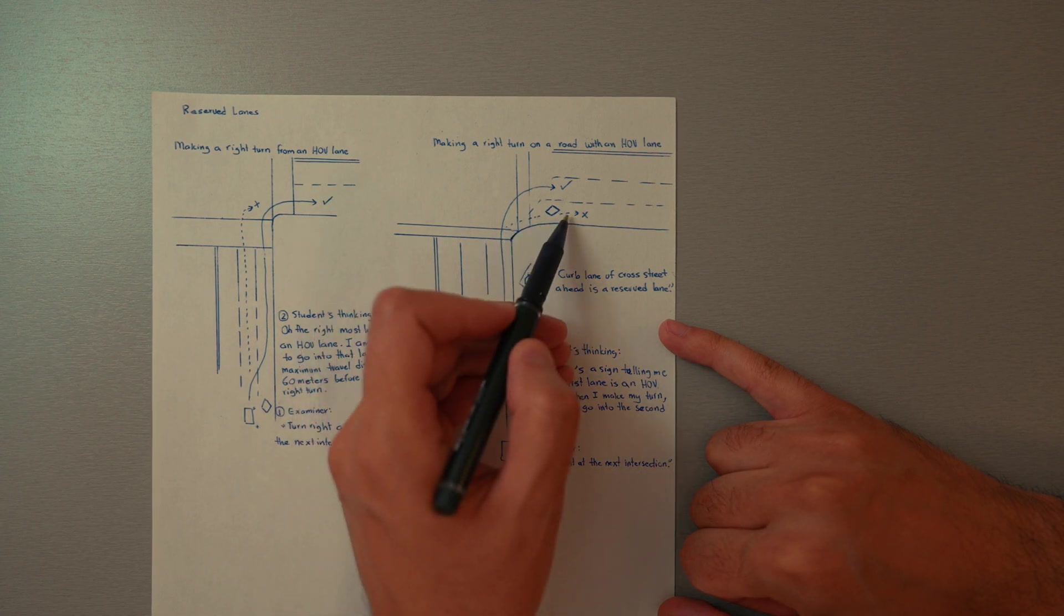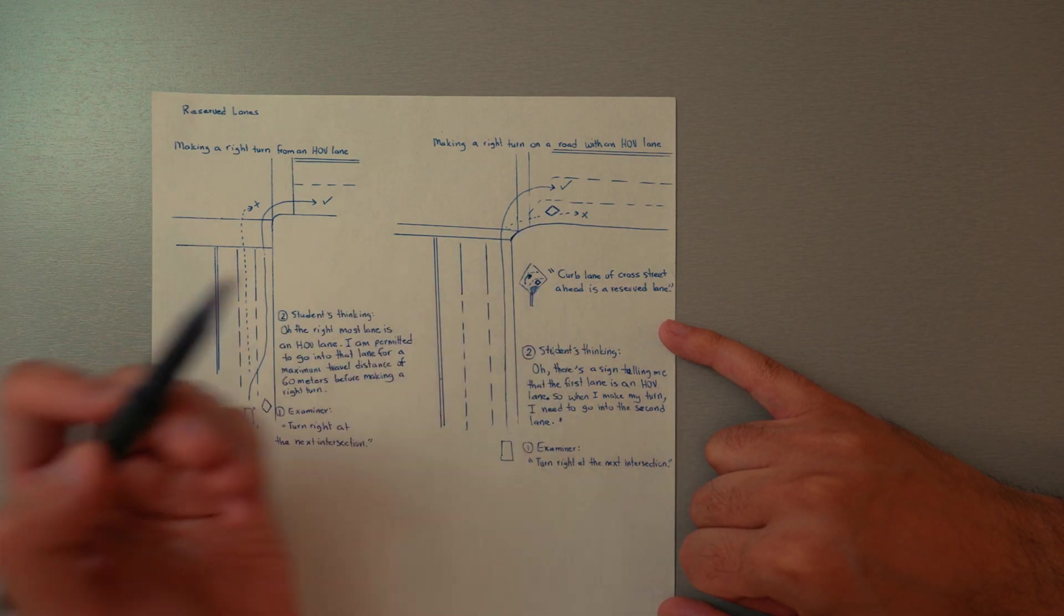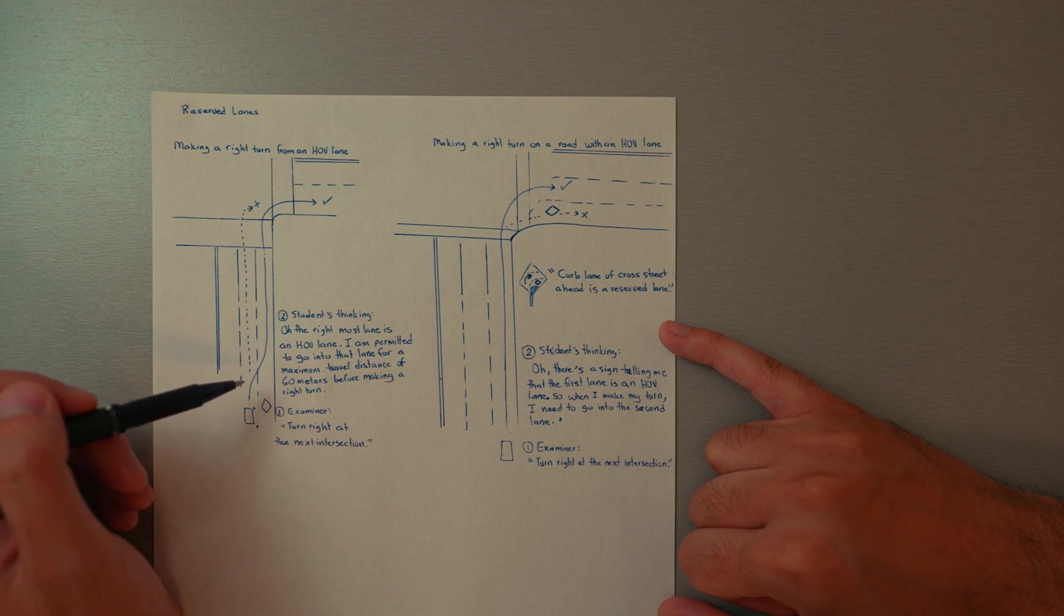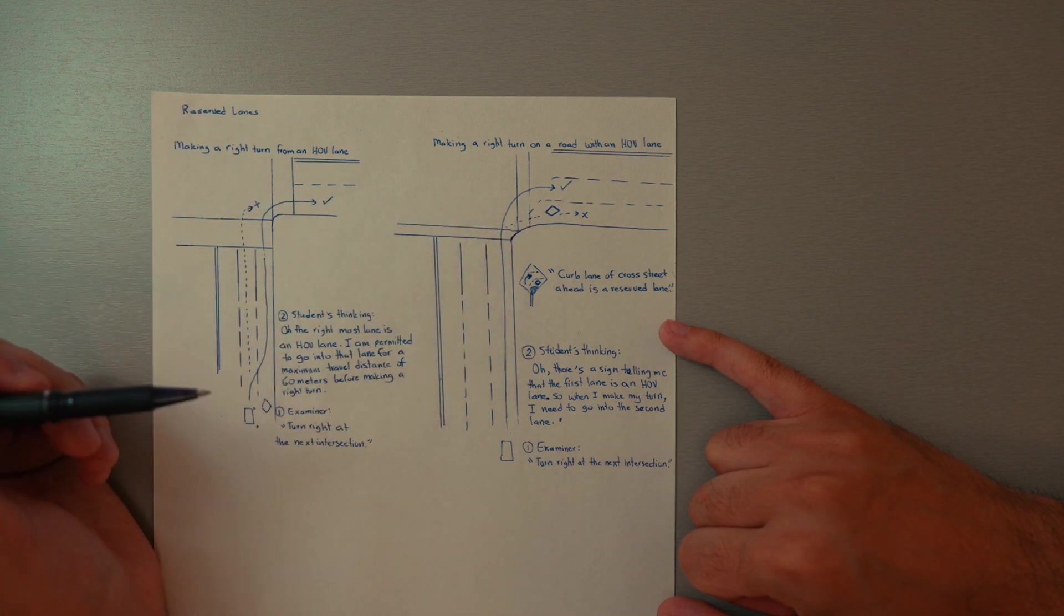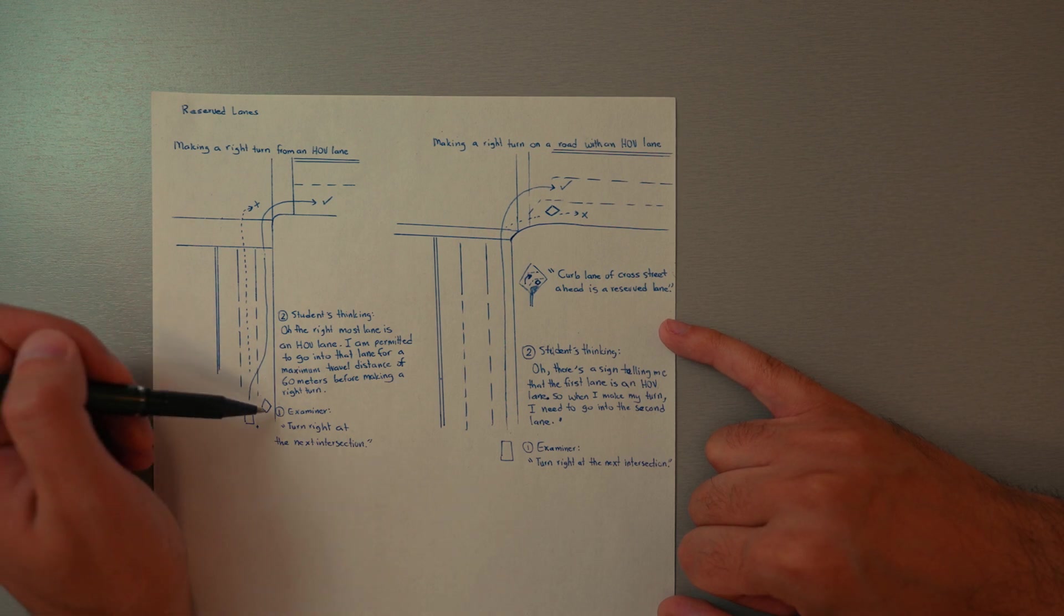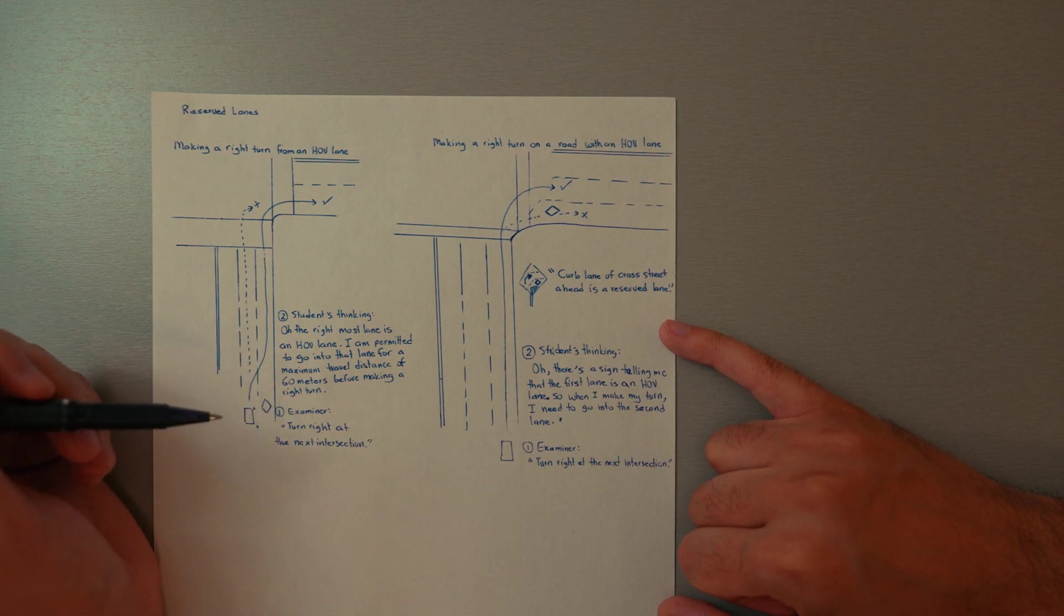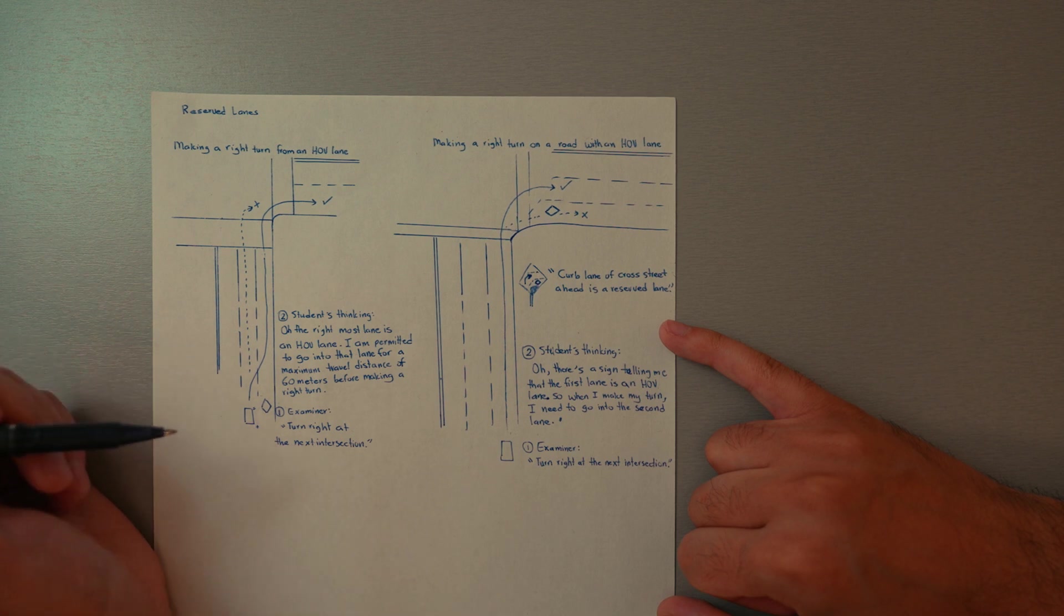Now the only time you may be permitted to go into the HOV lane is if it's a shared lane, so it says like two people can be in this lane. If it's like a carpool share lane...